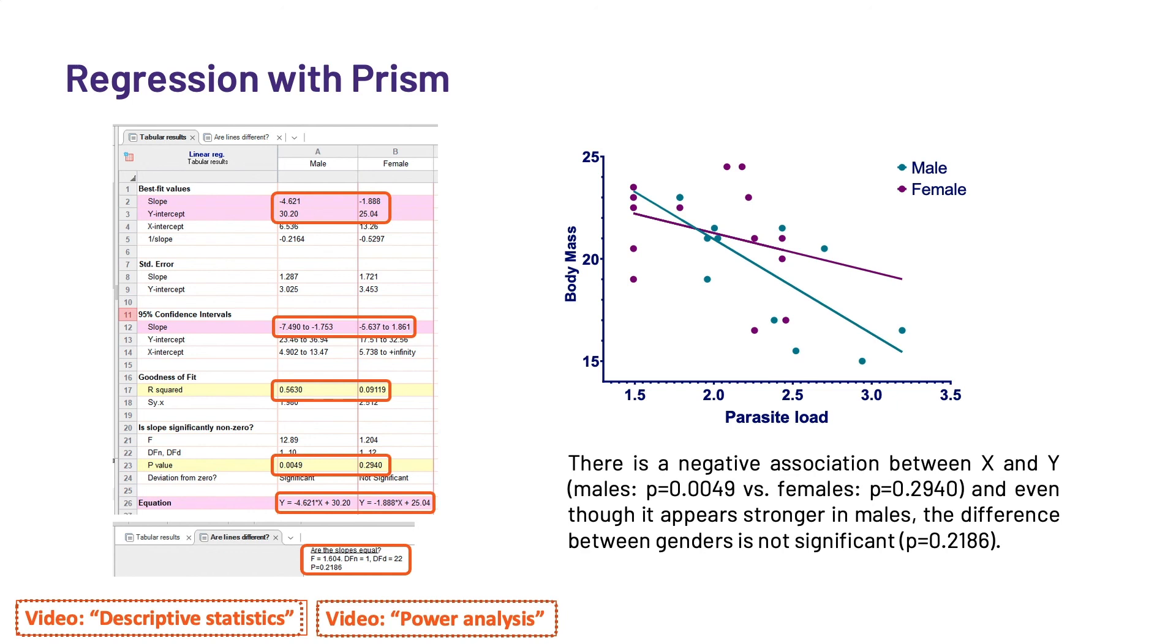We also get the p-values associated with the slopes. To the question, are the slopes equal? Prism answers yes. Or rather, there is no significant difference between the two genders. So, from this data, we can conclude that there is a negative association between x and y. And even though it appears stronger in males, the difference between the genders is not significant.